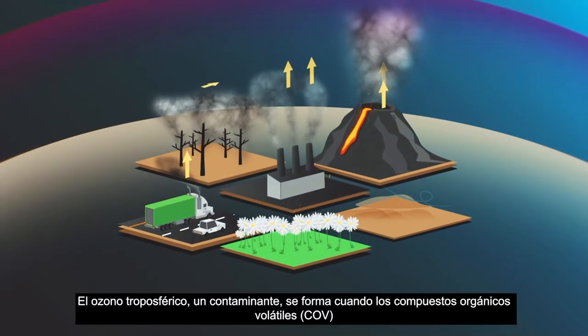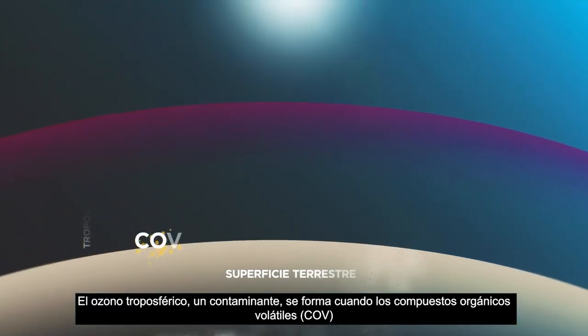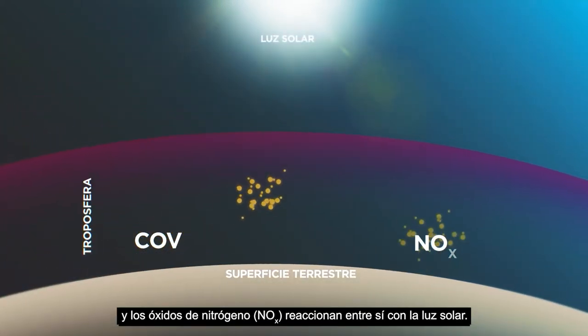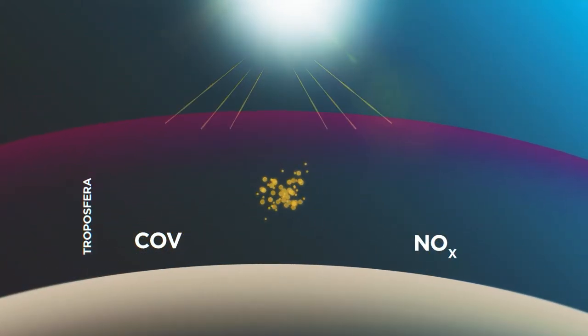Tropospheric ozone, a pollutant, forms when volatile organic compounds and nitrogen oxides react with each other in sunlight.